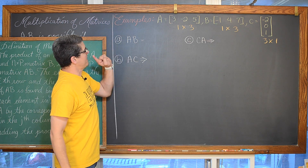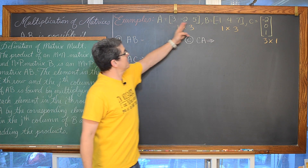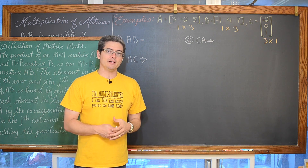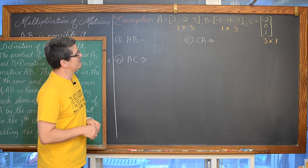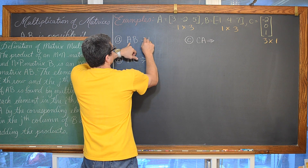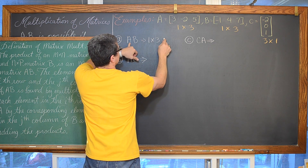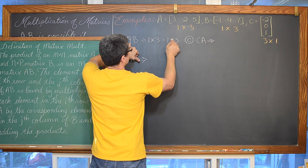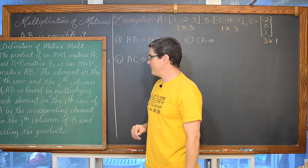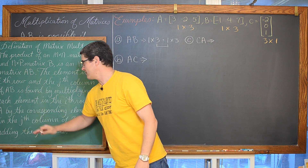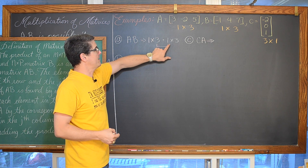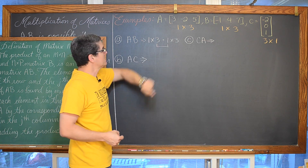The first thing we are going to do is take matrix A and multiply it by matrix B. They are both 1 by 3 matrices. You might think that having the same order means we can multiply them — but no. That is good for adding or subtracting matrices, not multiplying. We are trying to take a 1 by 3 and multiply by a 1 by 3. The number of columns in the first matrix has to match the number of rows in the second.